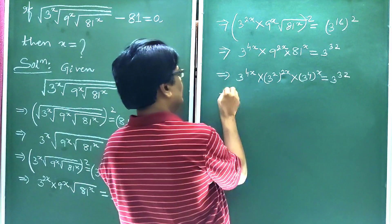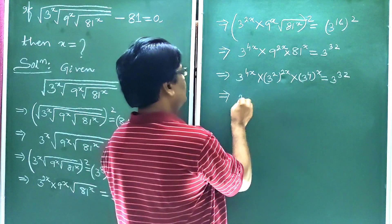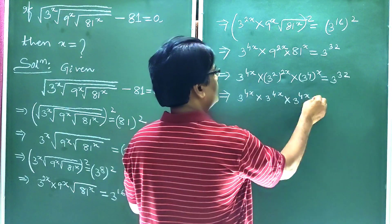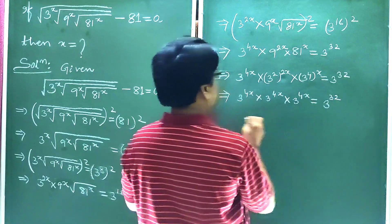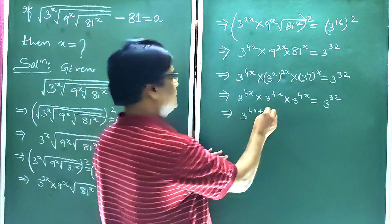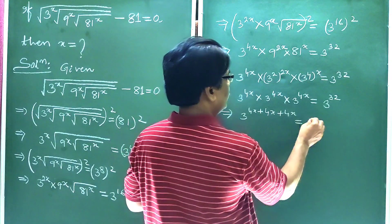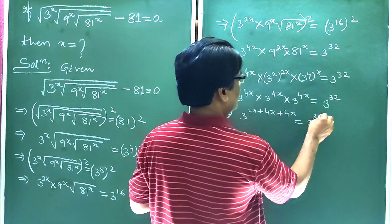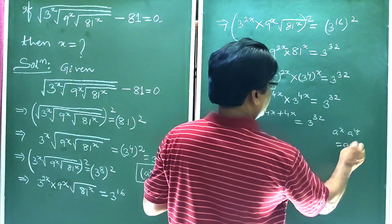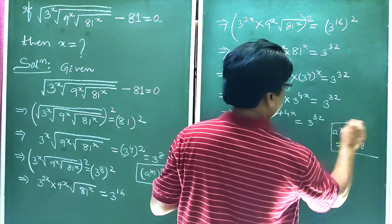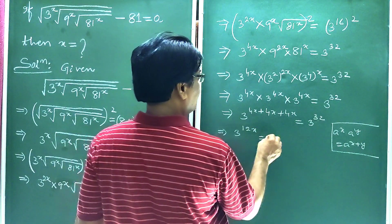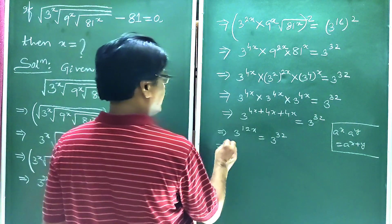So this implies 3 to the power x, into 3 to the power 2x, into 3 to the power 4x is equal to 3 to the power 32. We know that a to the power x into a to the power y is equal to a to the power x plus y. So this implies 3 to the power x plus 2x plus 4x, which gives 3 to the power 12x is equal to 3 to the power 32.